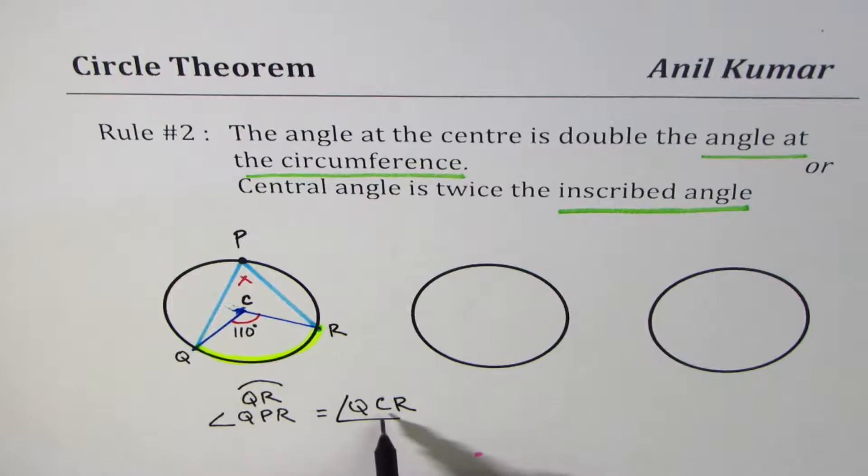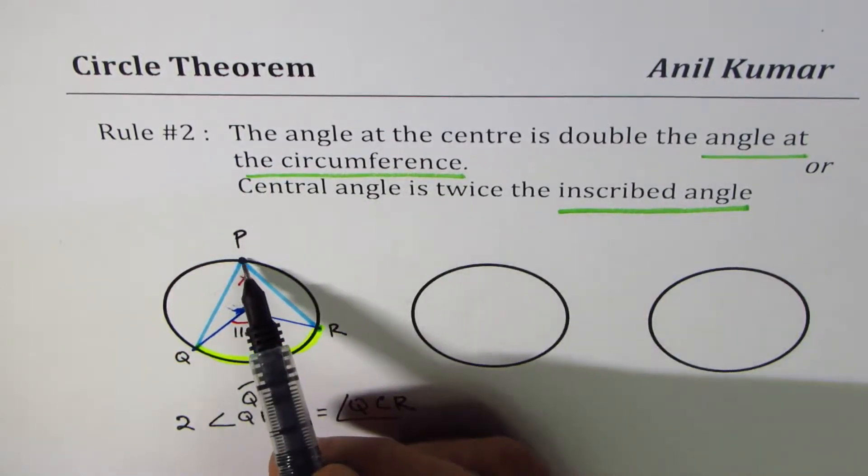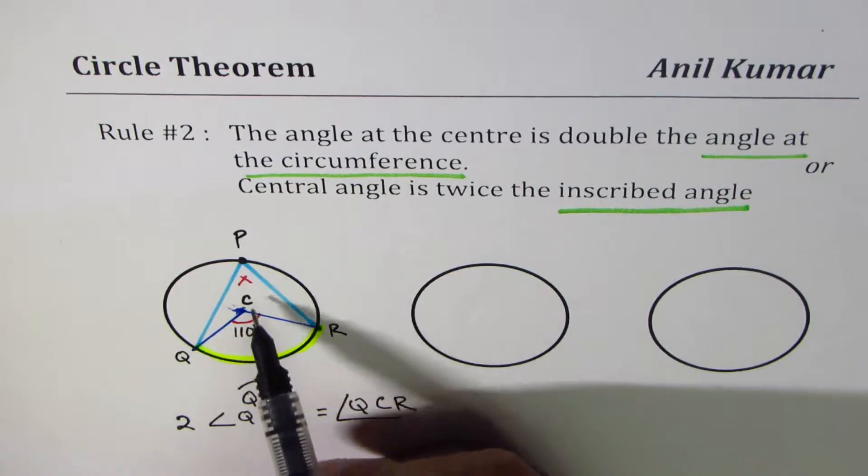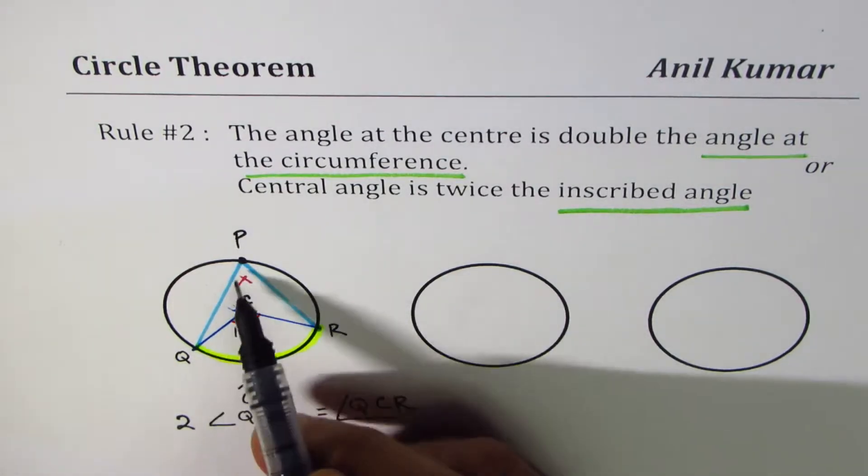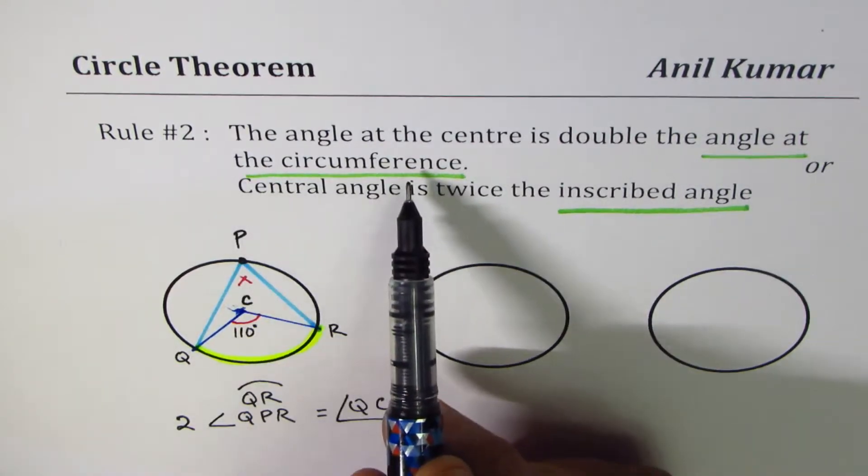The relation between the two is that twice the inscribed angle, or we refer to as the angle at the circumference, since point P is on the circumference, so we normally refer to this as angle at the circumference.